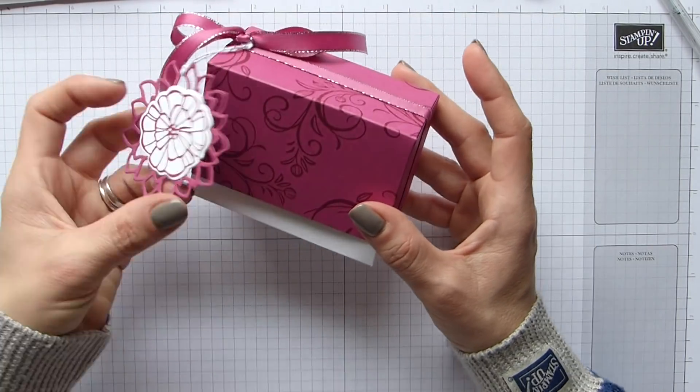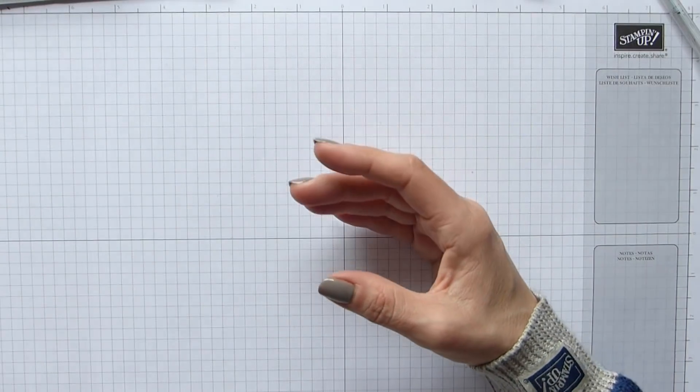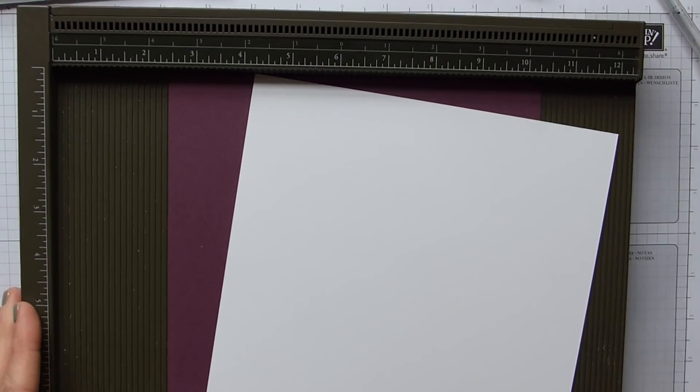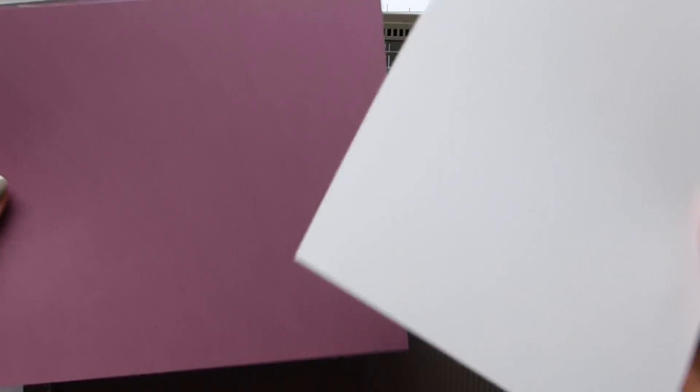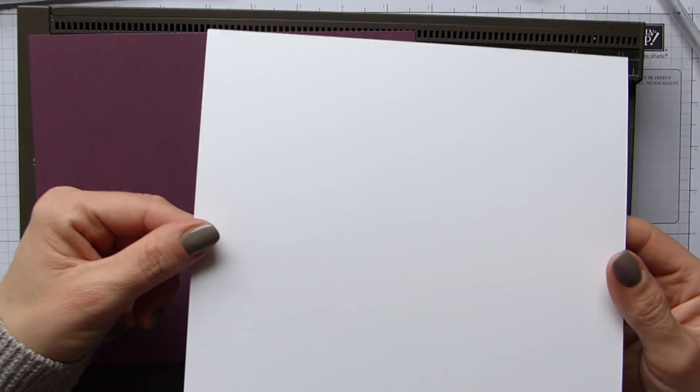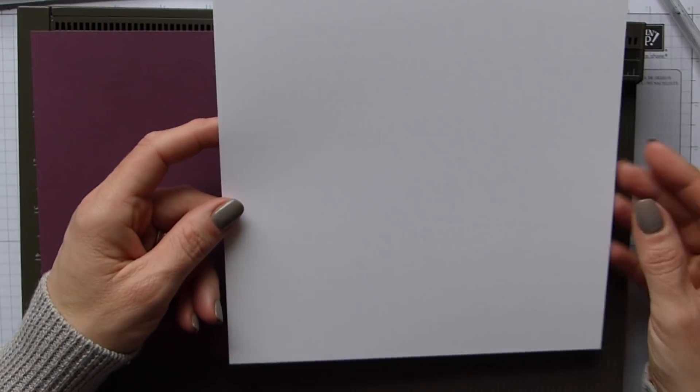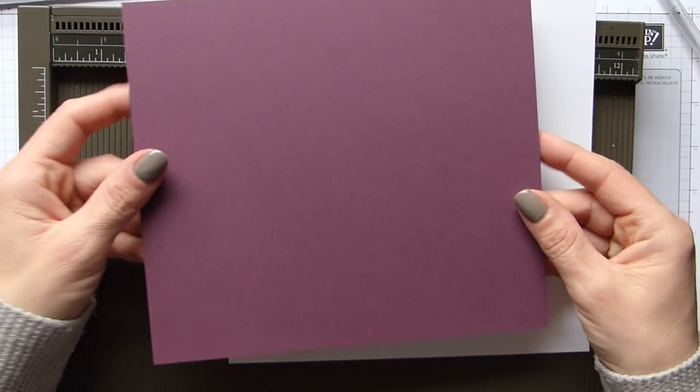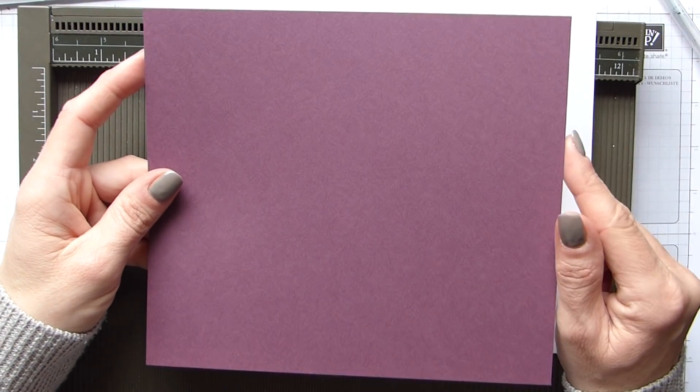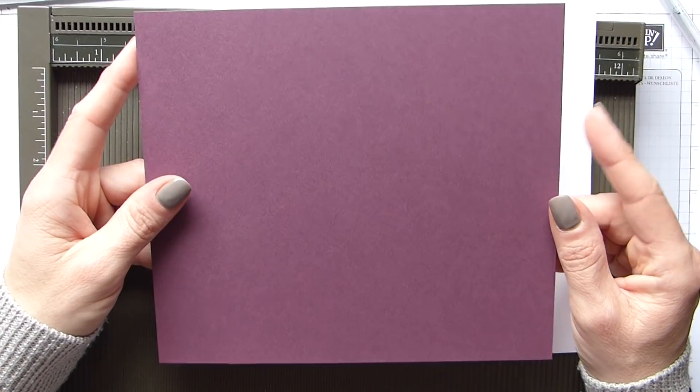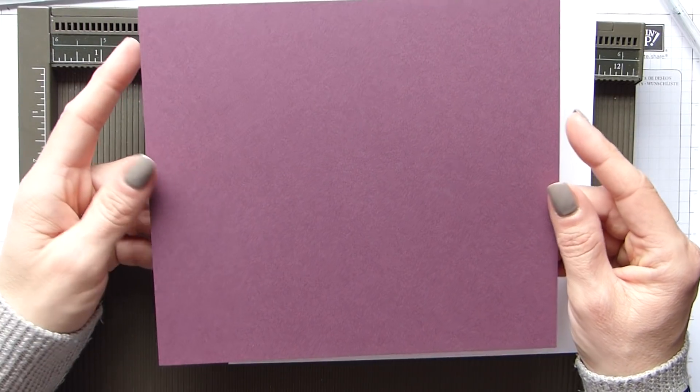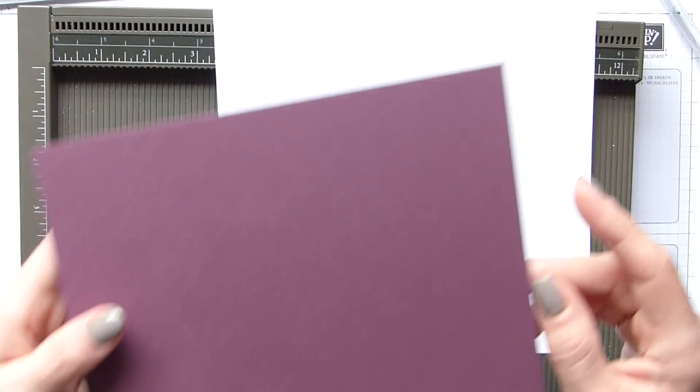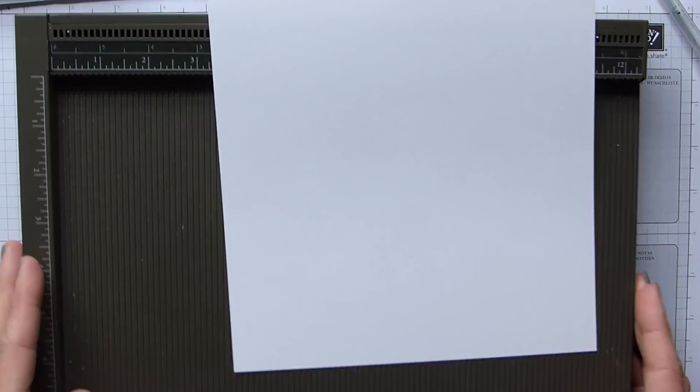I'm going to show you how to make it. So to start off with you are going to need a sheet of whisper white for the base of the box and this is eight inches by eight inches or 20 by 20 centimeters. Then you'll need some colored card stock and mine is fresh fig and this is eight by seven inches or 20 by 18 centimeters. So we'll do the base first with the whisper white.